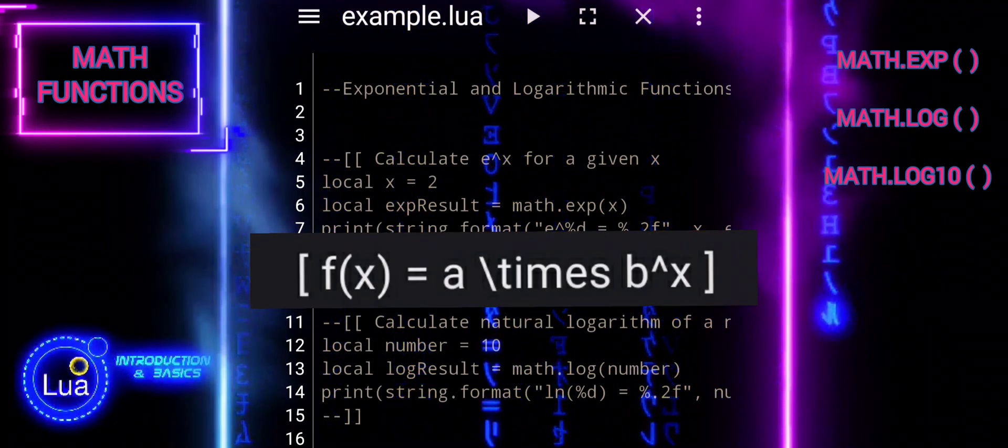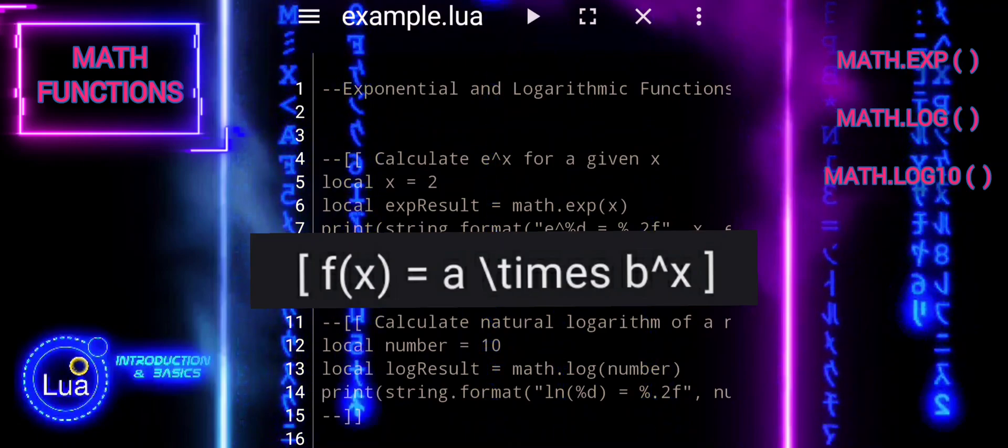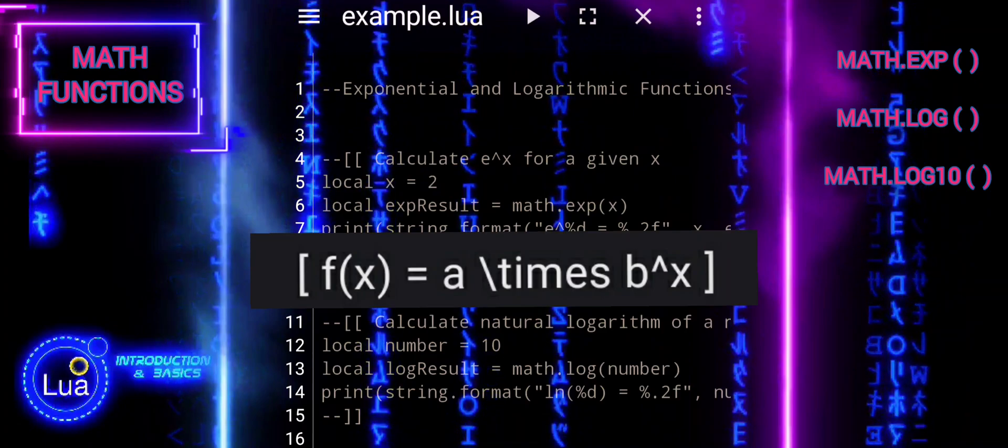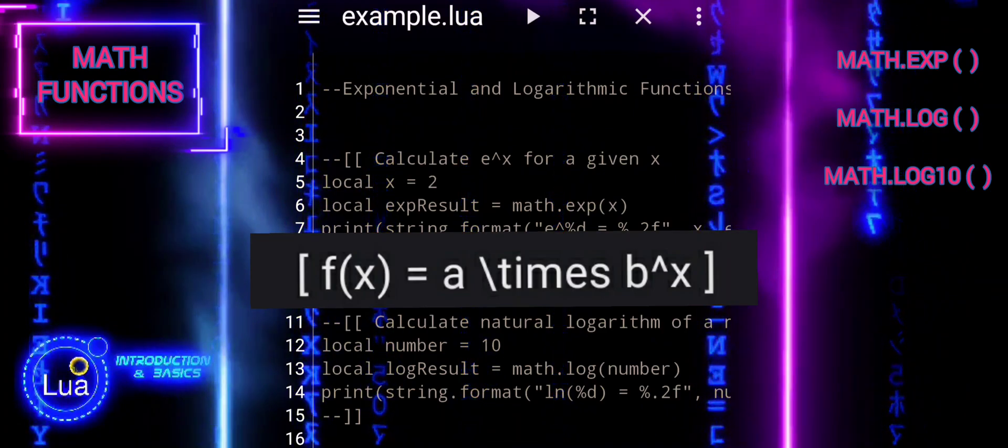This property leads to exponential growth or decay, depending on whether the base b is greater than 1 (meaning growth) or between 0 and 1 (meaning decay).